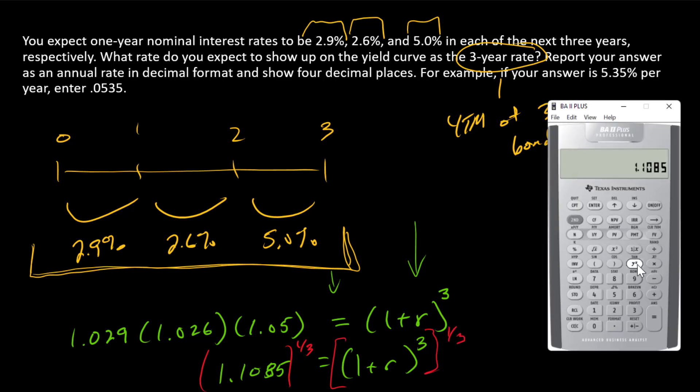Let's do that in my calculator. Raise to the power of one-third. What does that equal? I get 1.0349, so r is 3.49%.